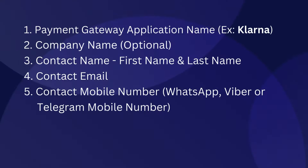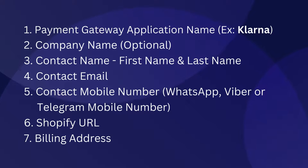1. Payment gateway application name, example: Klarna. 2. Company name (optional). 3. Contact name — first name and last name. 4. Contact email. 5. Contact mobile number — WhatsApp, Viber, or Telegram mobile number. 6. Shopify URL. 7. Billing address.